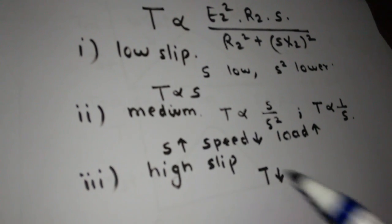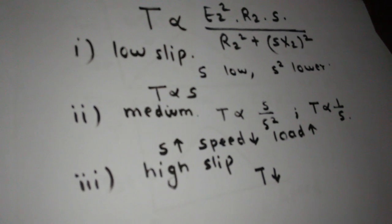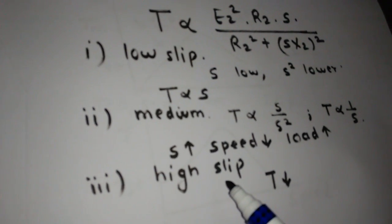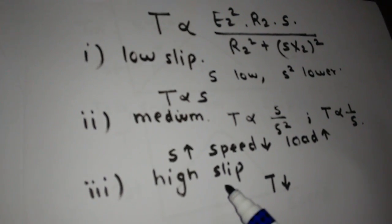The third region is high slip. At high slip, that will be beyond the maximum torque, and in that case the motor slows down and eventually stops.